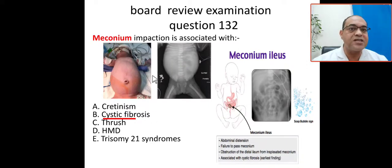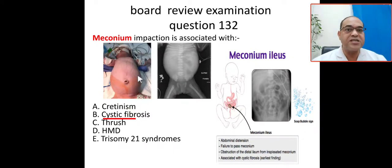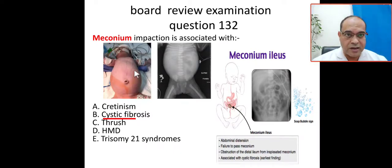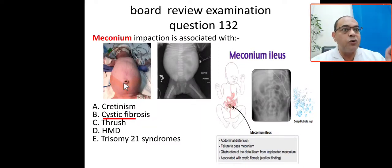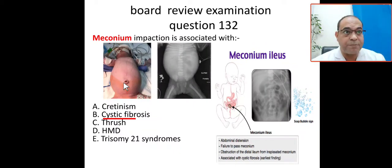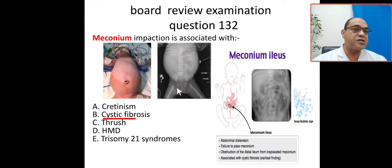The classic clinical presentation of meconium ileus includes severe abdominal distension and dilated bowel loops. On inspection, you will see visible peristalsis. If you look at the X-ray of this baby, you can see characteristic findings.